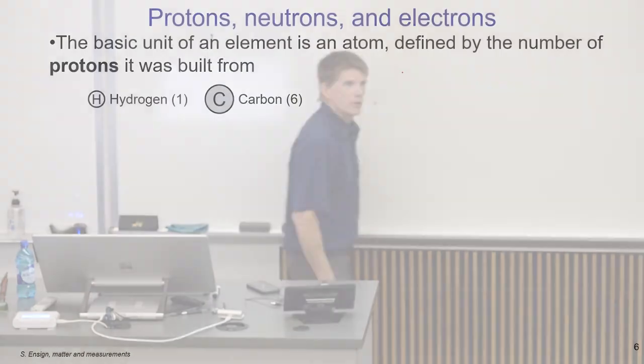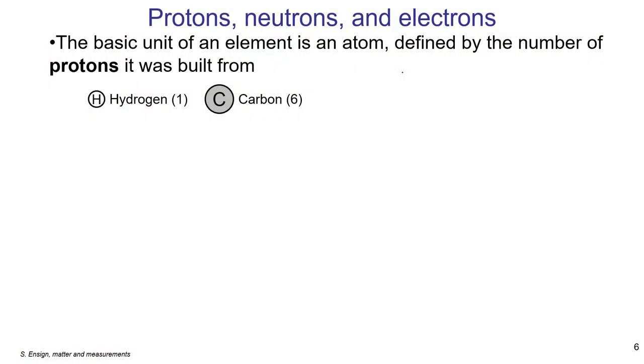So for example, carbon, we're carbon based life forms. In order to be a carbon atom, you must have six of these protons in your nucleus. A nitrogen atom, in contrast, has seven protons in its nucleus. And so on. There's oxygen with eight.